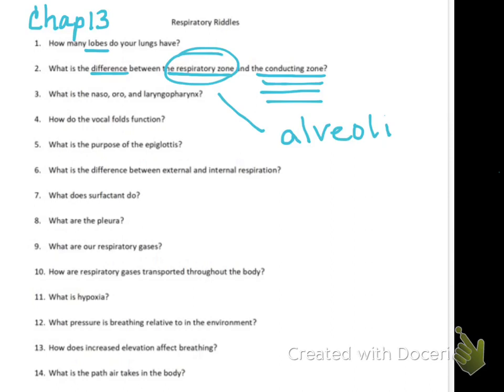The respiratory zone is the actual location where gas exchange occurs. This only includes the alveoli - the little grape-like clusters in the lungs. That's where oxygen comes into the body and carbon dioxide goes out. Everything else is a conducting zone - essentially just a channel to get stuff in and out.